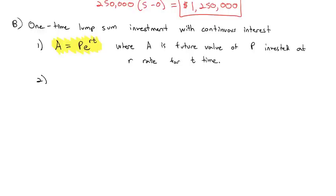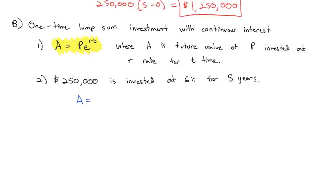For example, if I take that same $250,000 and it is invested at 6% for five years — notice this is a one-time investment — I throw $250,000 in the account, walk away, and come back in five years. We're looking for future value A. P is the principal of $250,000, times e to the r of 0.06, times five years. Plugging that into the calculator, we get $337,464.70.